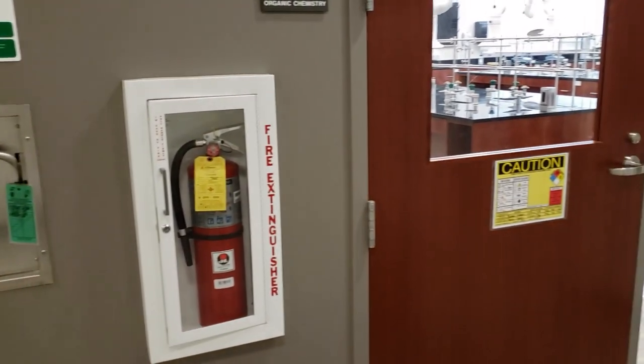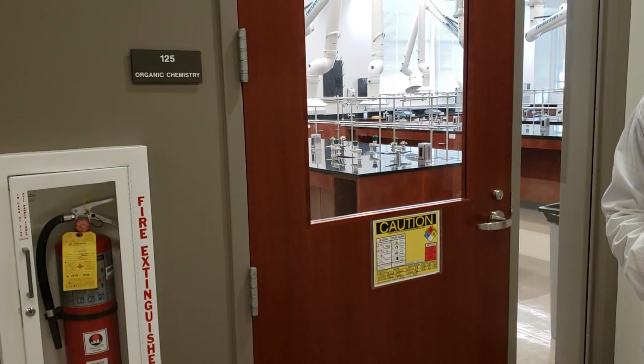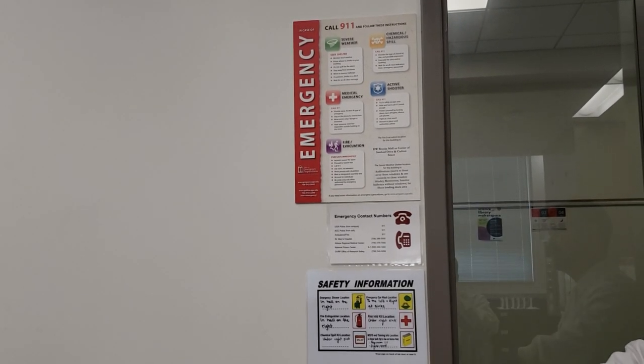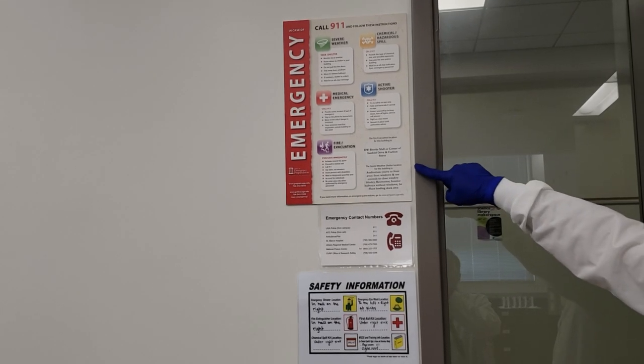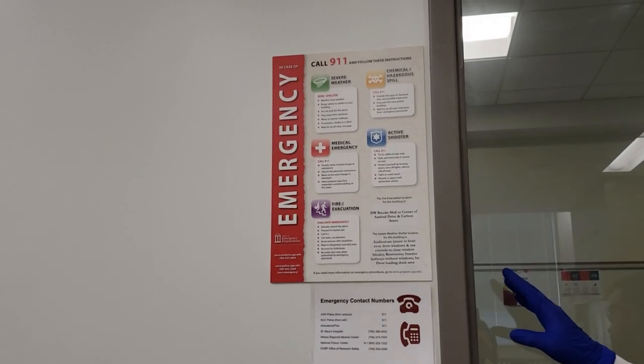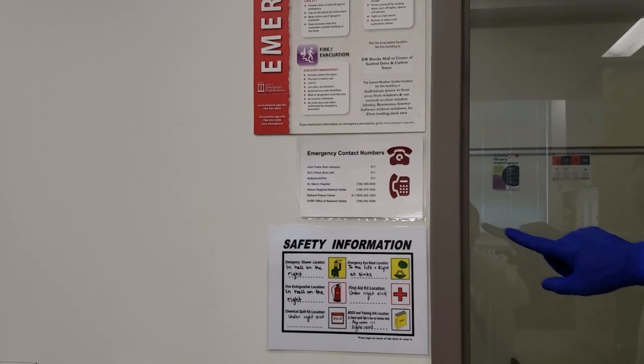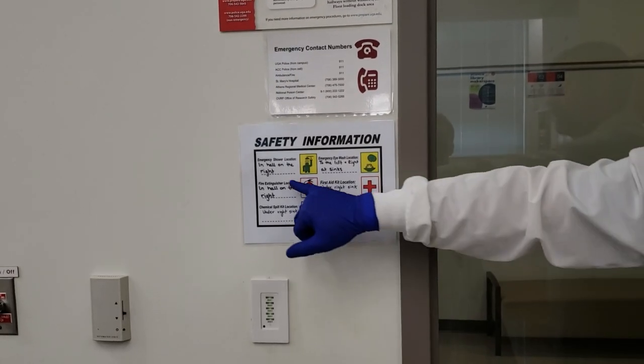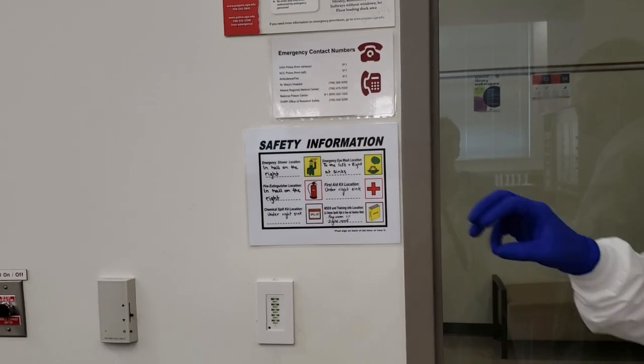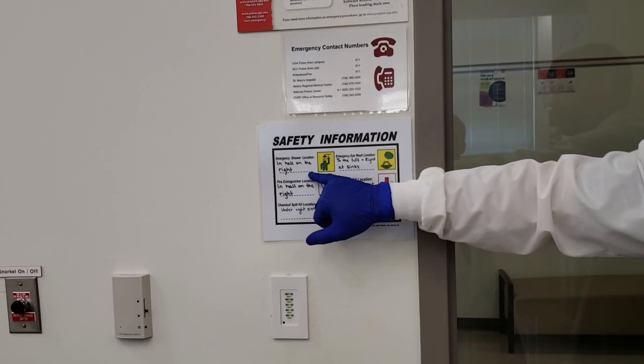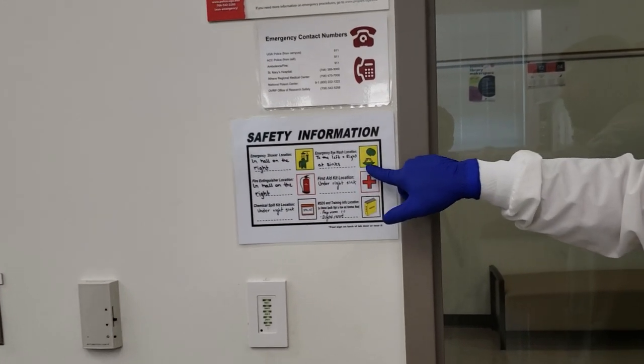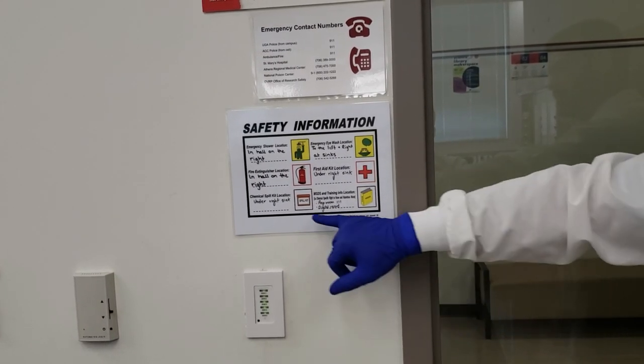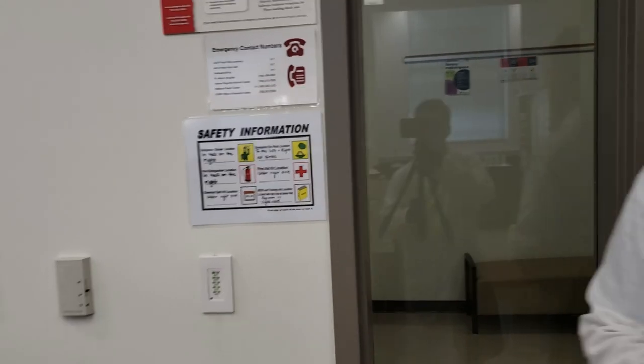Once inside the lab, we have emergency and safety signs with useful information. We have emergency condition signs available throughout the SLC, emergency contact numbers, and safety information showing relative locations of all safety equipment: shower location, eyewash stations, fire extinguisher, first aid kit, spill kit, and MSDS sheets. Let's take a look at some of these items.